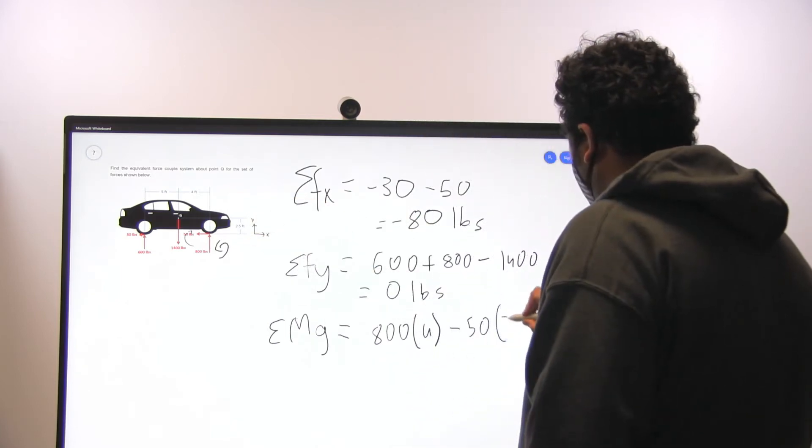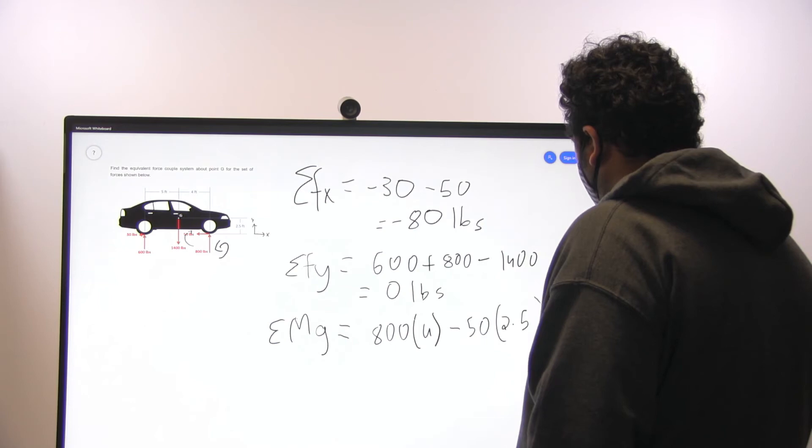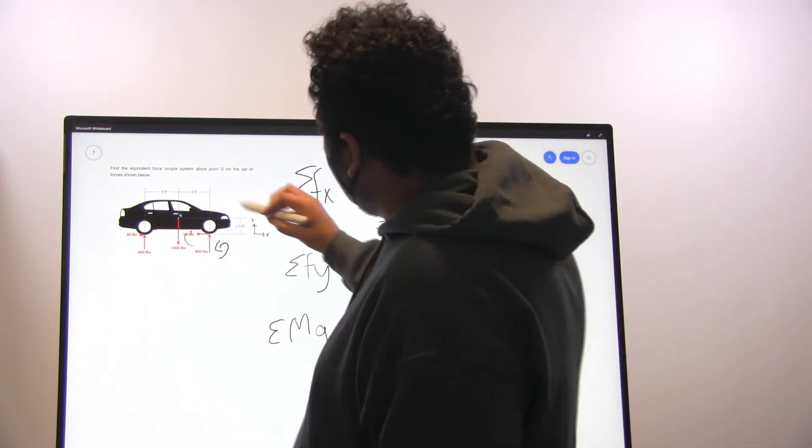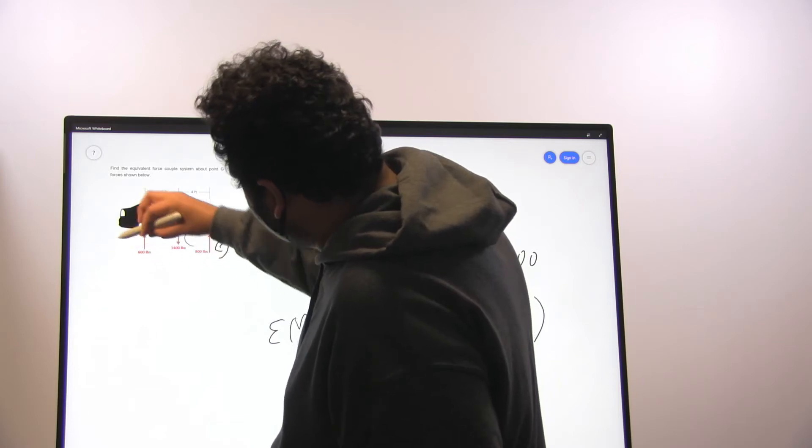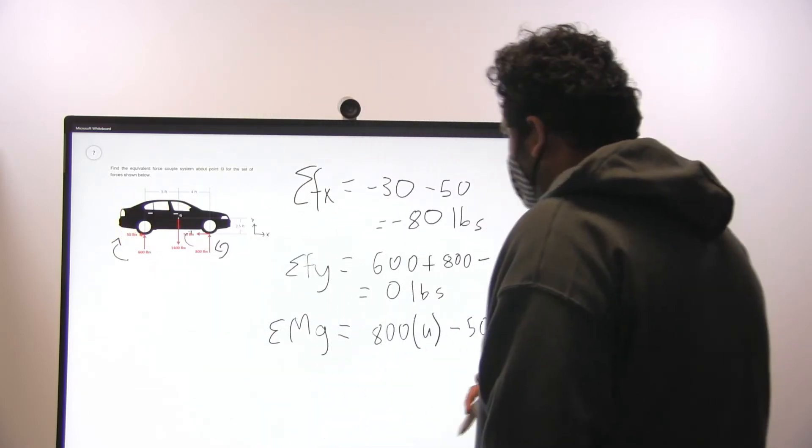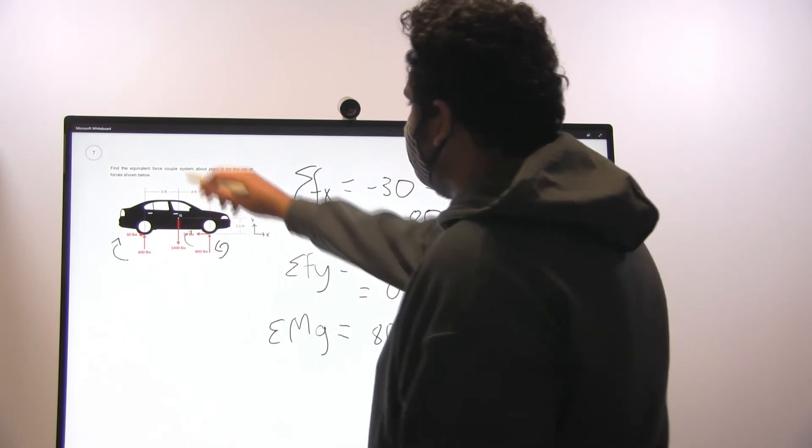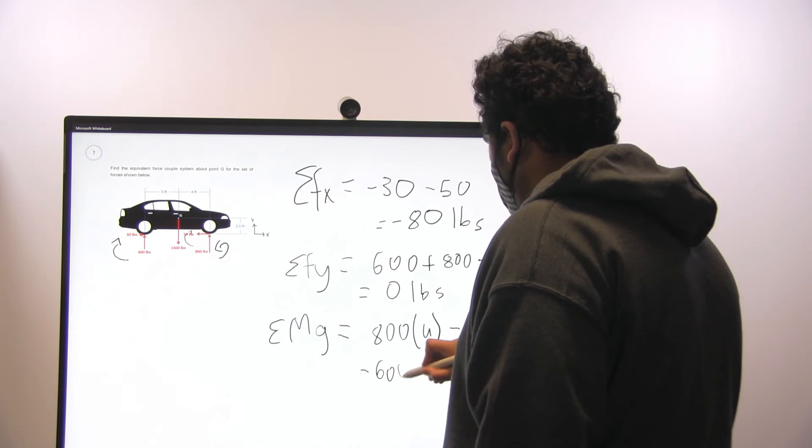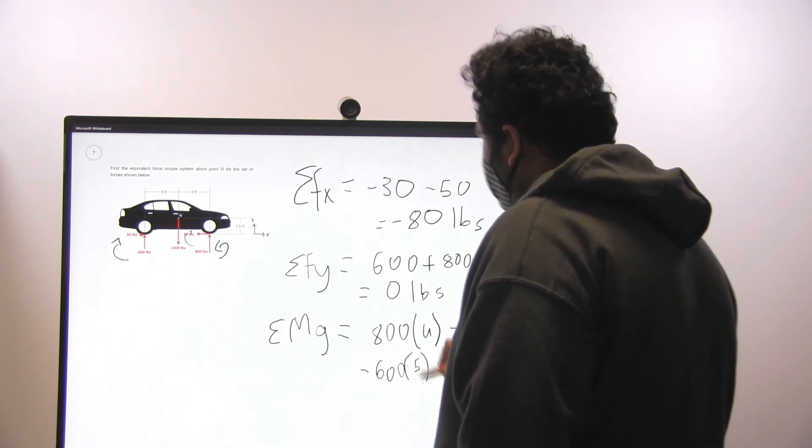Next we can do the same for the 600 pound, and it's going to be clockwise as well, and the length is 5 feet. So minus 600 times 5.